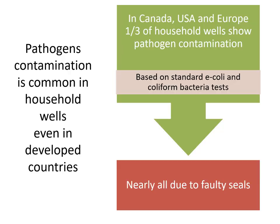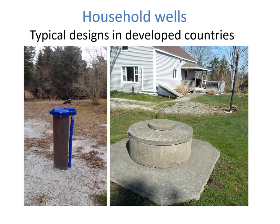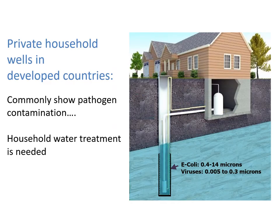Pathogen contamination in household wells is even common in developed countries — in Canada, Europe, and the U.S. — and this is nearly always due to faulty well seals. Private household wells in developed countries commonly show pathogen contamination, and therefore household water treatment is needed even there. Contamination is usually due to bacteria or viruses, which are very small particles and can travel down very small imperfections in the well seals.